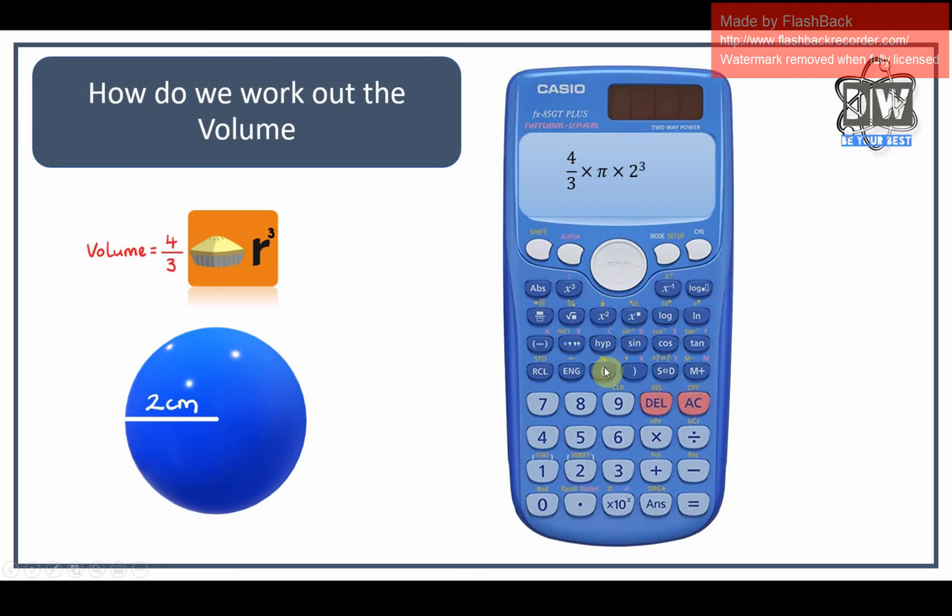So to get that we would use this button and we'd go four, move that down and three, move it across, times. Then we go shift and pi, and then times, and we go boom, this button here. You can change it to two to the power of three, and then once we've done that we would press equals.